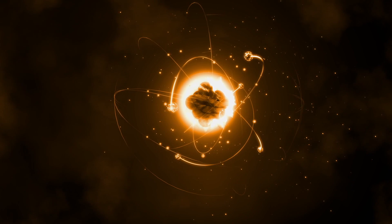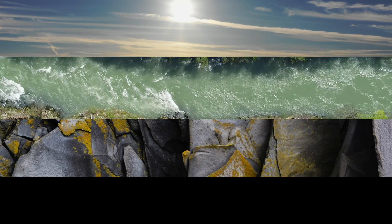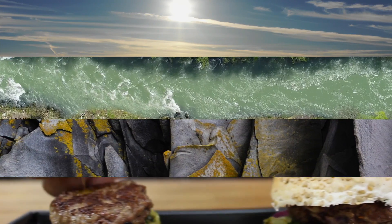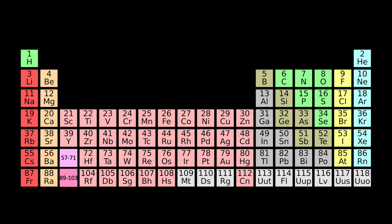The building blocks of our world are atoms. Air, water, rock, and food are all made of atoms in different combinations. Each type of atom belongs to a certain element, and there are more than 100 elements known to science. Their full diversity is shown by the periodic table, which arranges elements from lightest to heaviest.